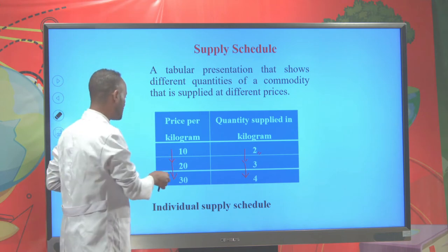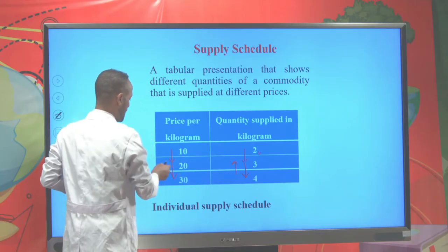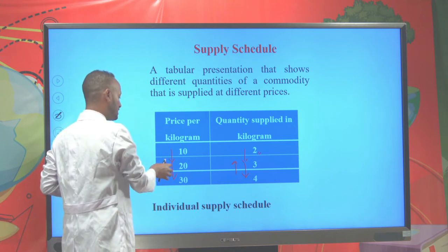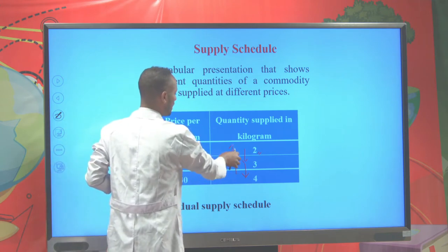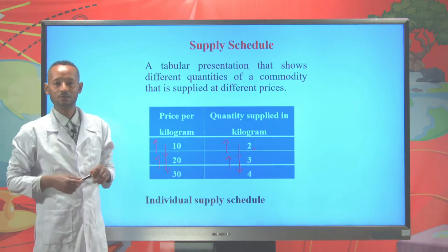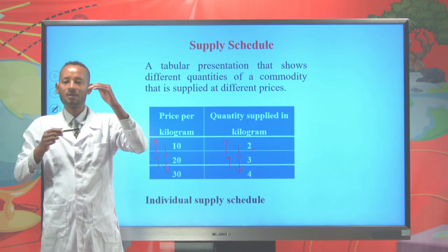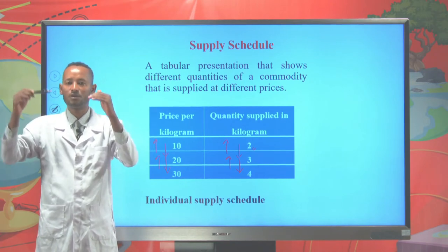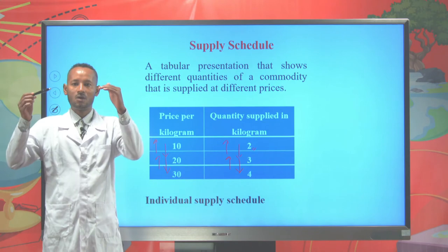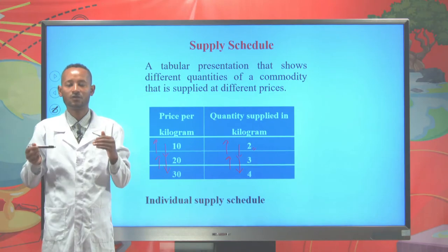And the converse also holds: as price of a kilogram of orange decreases, then the quantity supplied for orange will decline. As price of a kilogram of orange decreases from 20 to 10, then the quantity supplied for orange declines from 3 kilograms to 2 kilograms. From this, as price increases, the farmer or producers are highly encouraged or motivated with the rise in price and they will supply more of a commodity. And as price of a commodity declines, they will be highly discouraged and they will offer less of a commodity.